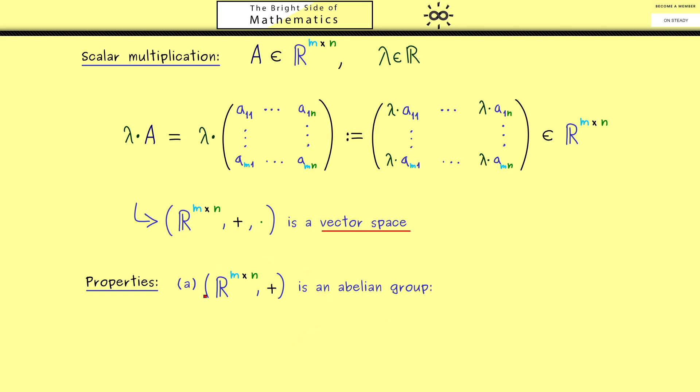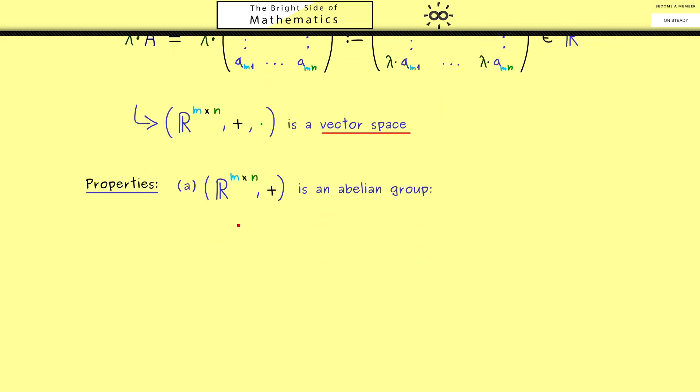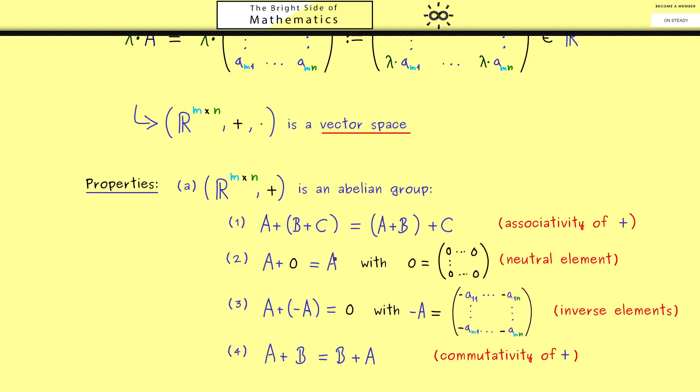However I want to do this very quickly, so let's get into it. First is together with the addition we have a so-called abelian group. This means that 4 properties are fulfilled here.